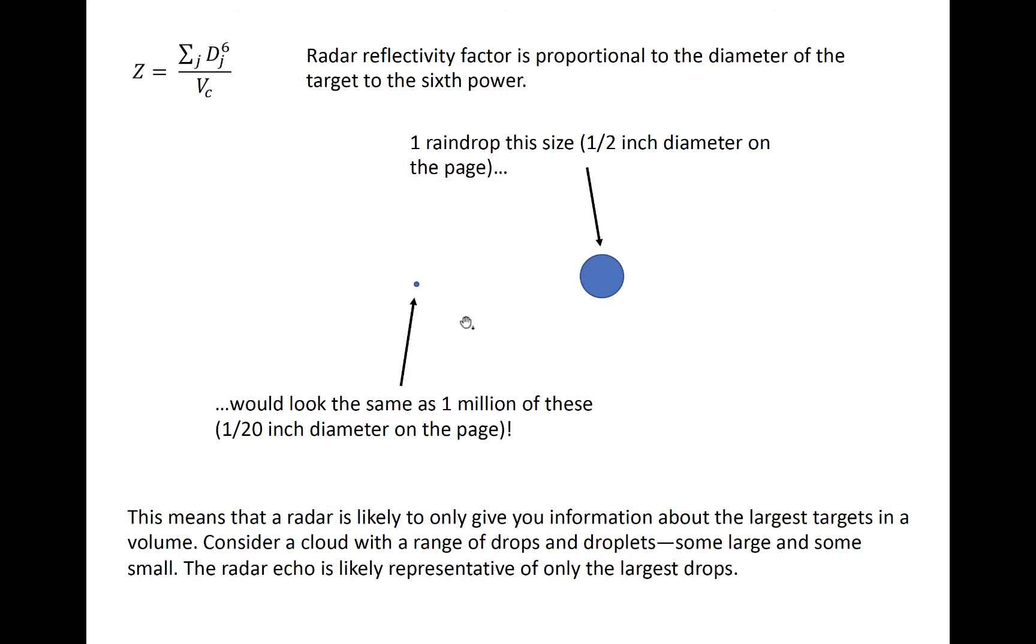The two blue dots are drawn to scale, with the blue dot on the right being ten times the diameter of the small dot on the left. Because of the sixth power dependence of radar reflectivity factor on size, the large drop would yield a reflectivity ten to the sixth, or one million times larger than the single small droplet. Said another way, one million small droplets would be required in a single volume to yield the same reflectivity as the one large drop, even though the one million small droplets would collectively have ten thousand times the total volume.